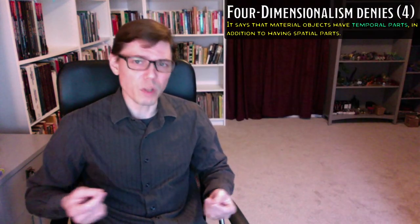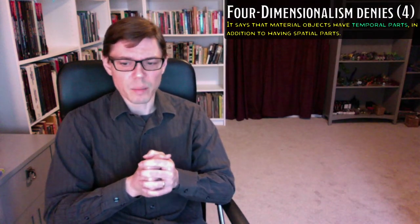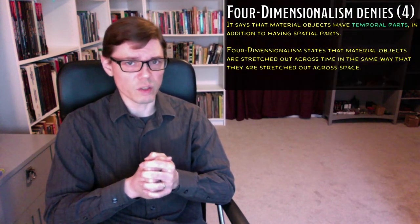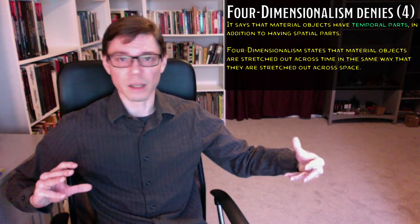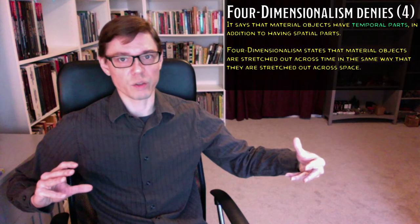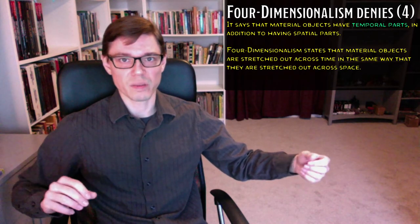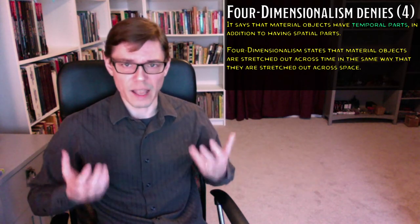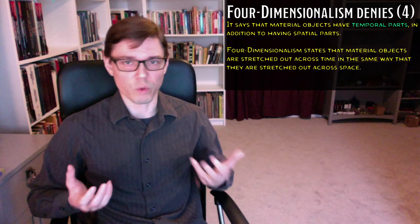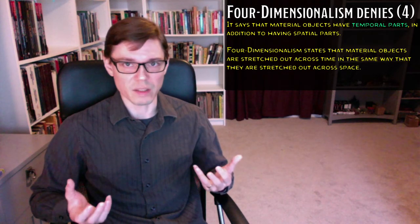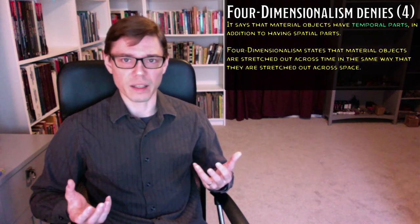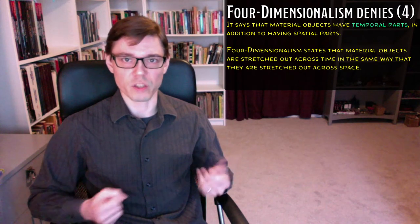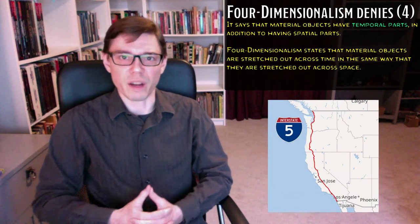Another way to put this is to say that material objects, according to the four-dimensionalist, are stretched out across time, in the same way that they're stretched out across space. And in order to get a clear handle on what the four-dimensionalist is saying, let's consider a very elongated object, one that's stretched out across space: Highway I-5.